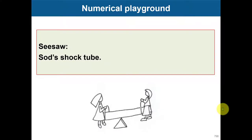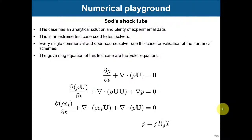Let's move to the last tutorial of this module. After everything we've covered, this should be super easy. By now, you should have a clear idea of the fvSolution and fvSchemes dictionaries. What we're going to do now is solve the Euler equations for the Sod shock tube — a very severe case involving interactions of different shock waves and discontinuities. This is a standard benchmark that every CFD solver should pass.